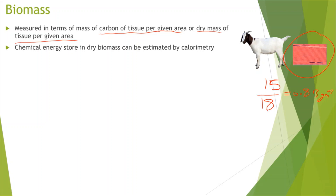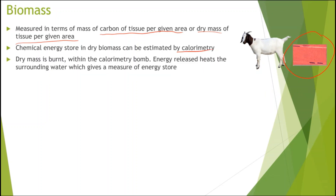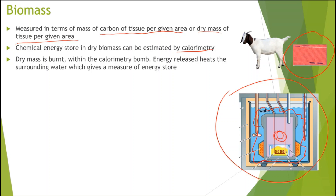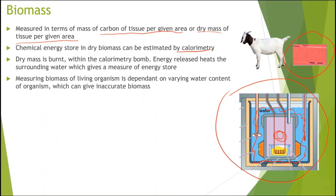The chemical energy stored in the dry biomass can be estimated using calorimetry. In calorimetry we burn the dry mass inside a calorimetric bomb. The energy released heats the surrounding water, and that temperature rise gives a measure of the energy stored in that dry biomass.